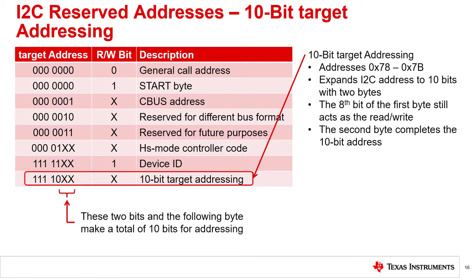With the normal 7-bit I2C address and all of the reserved addresses, the number of possible I2C devices on a bus becomes limited. To expand the number of devices, several reserved addresses can be used to expand the address to 10 bits. In the reserved address, the last two bits of 0x78 to 0x7B represent the first two bits used to expand the address space. A second full byte of 8 bits is used to complete the 10-bit address.